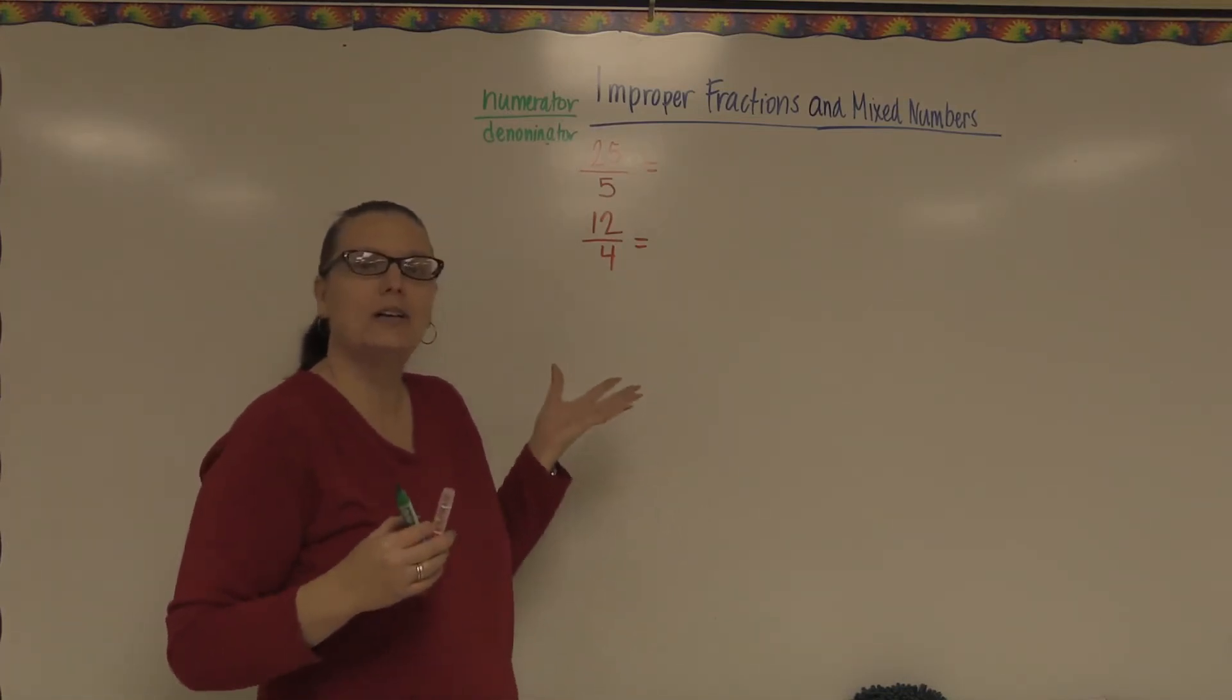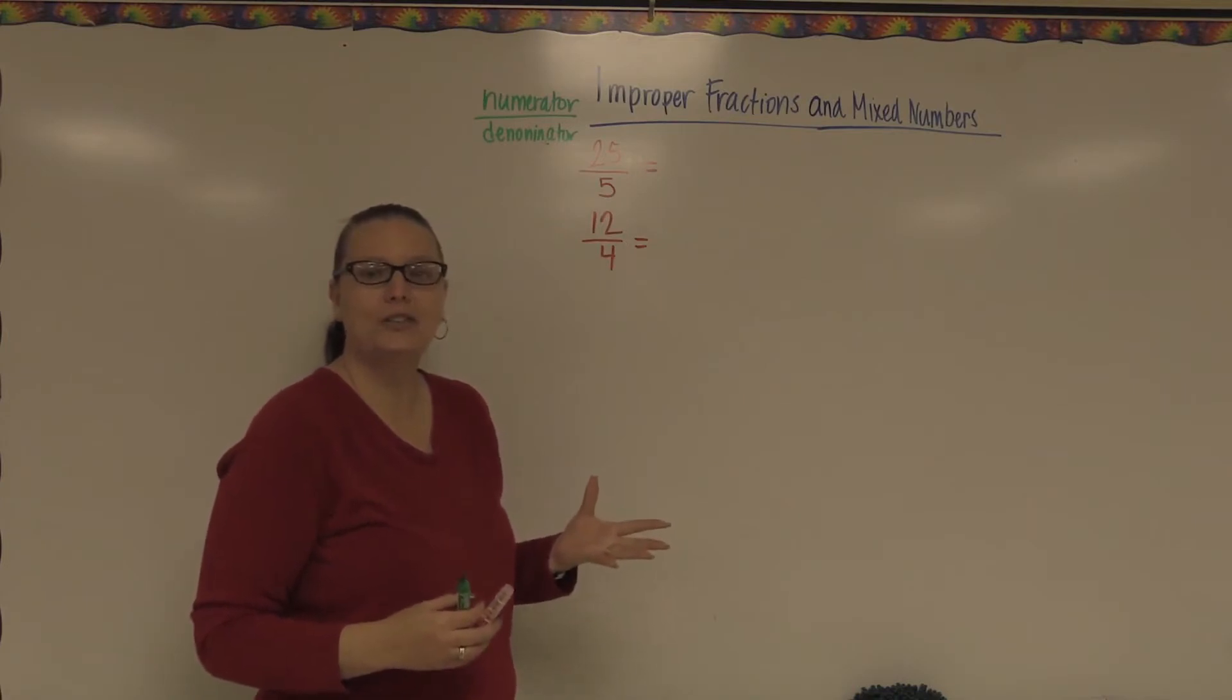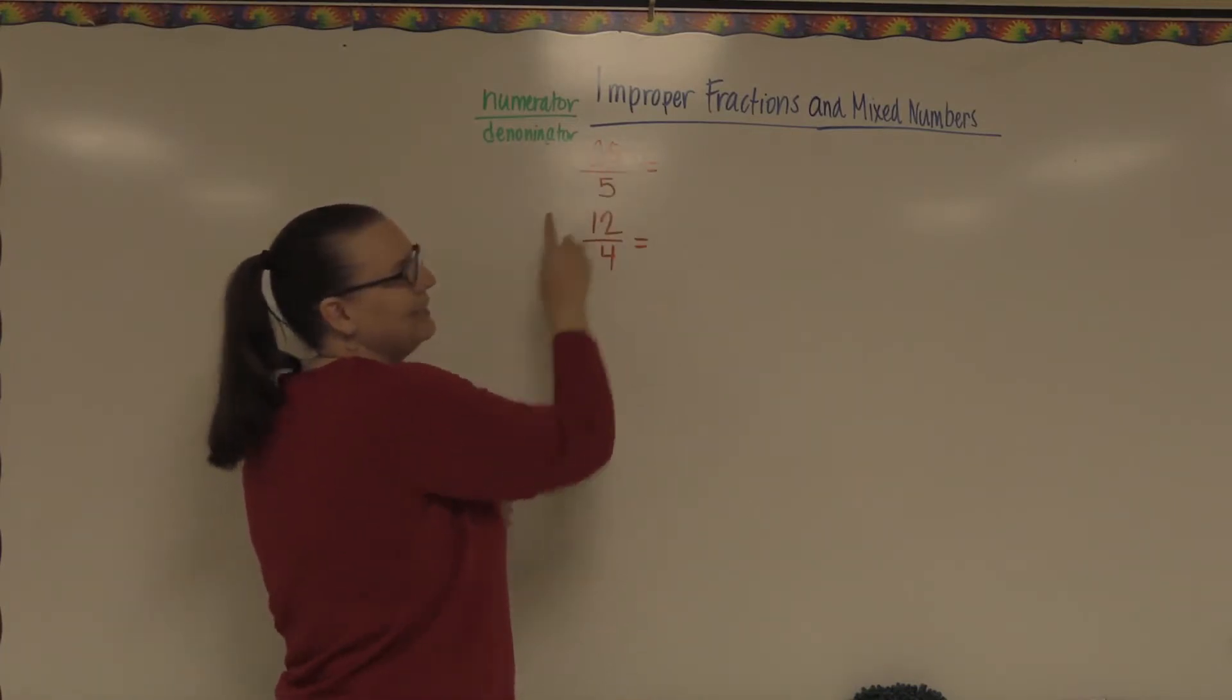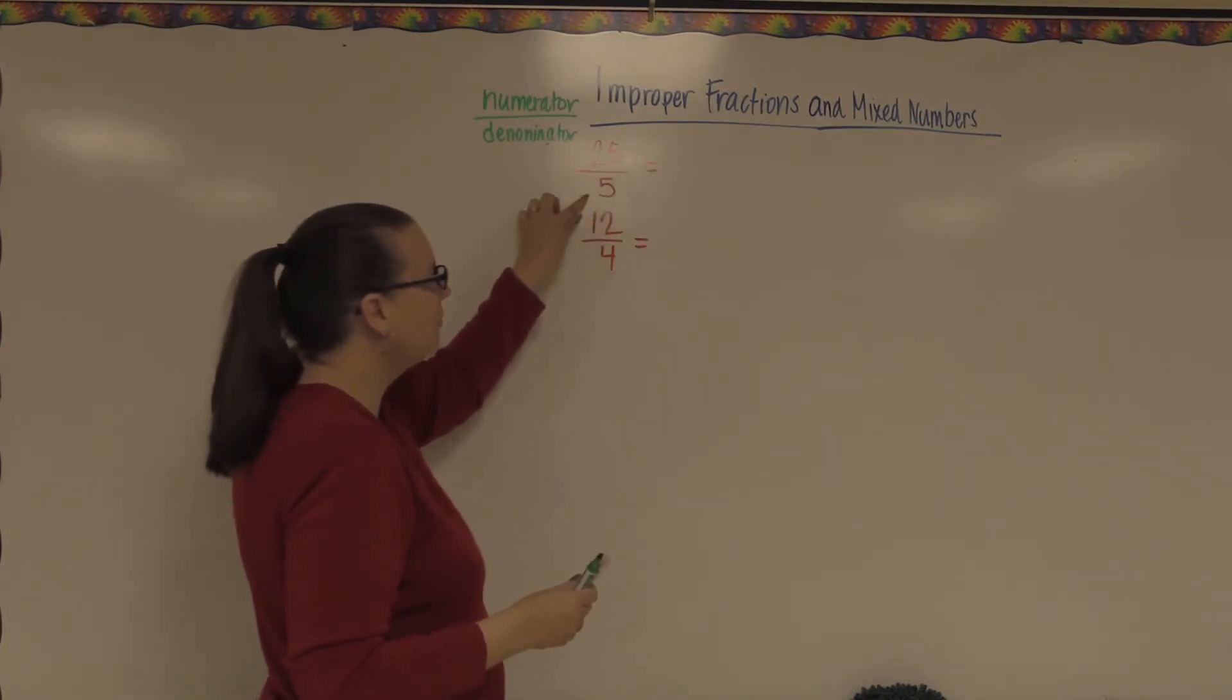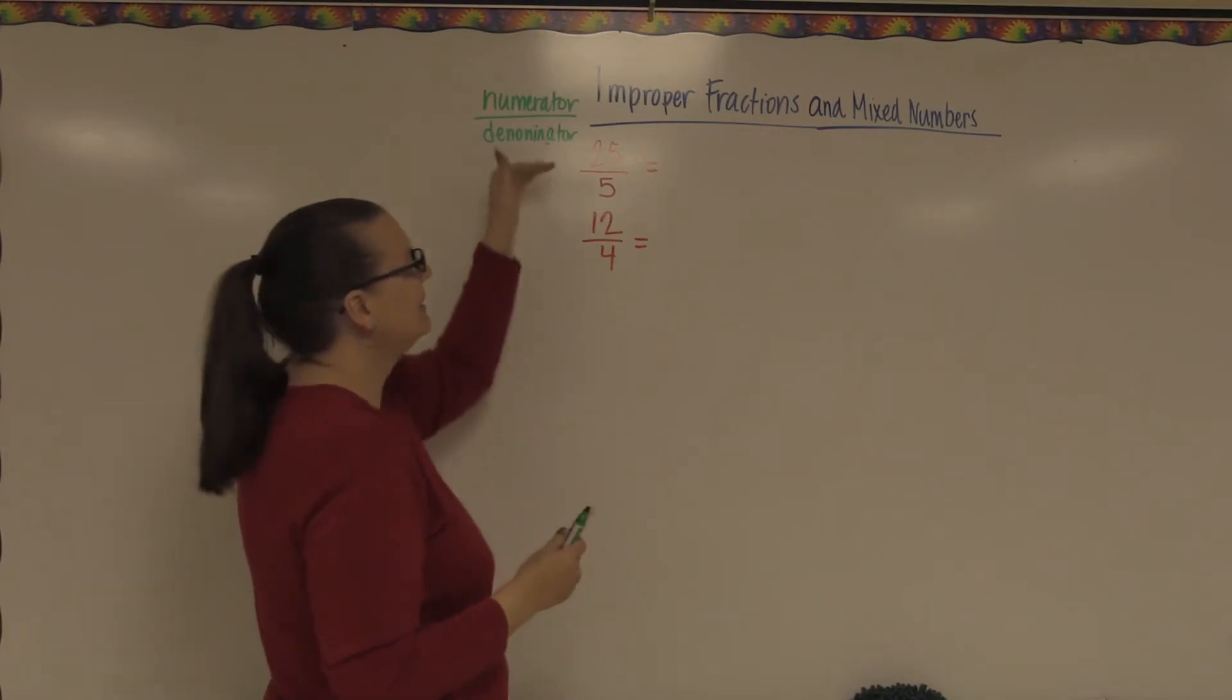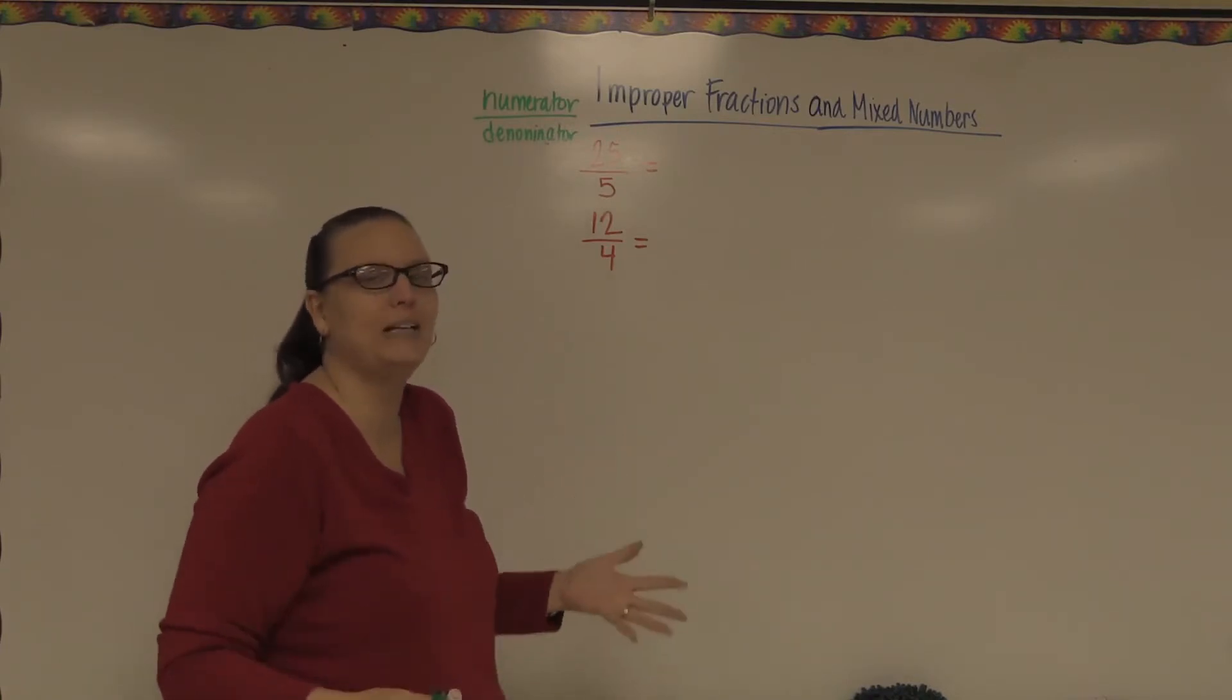One of the things I'm going to be showing you how to do today is to take an improper fraction and make it work. In order to do that, we need to do what's called creating a mixed number. A mixed number is going to have a whole number along with the fraction. So what we're basically saying with this improper fraction is that we have the whole for something is made up of five pieces. This is telling us that we have 25 pieces altogether. This is like saying we have 25 and we need to divide it by five. We need to see how many wholes we can make out of that.